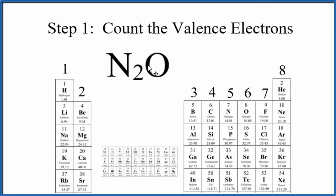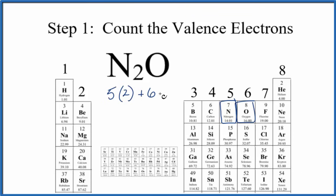Pause and find the number of valence electrons for N2O, dinitrogen monoxide. Nitrogen is in group 15, sometimes called 5A, and has five valence electrons — but we have two of them, so multiply by 2. Plus oxygen has six valence electrons. That gives us 10 plus 6, for 16 valence electrons for N2O.